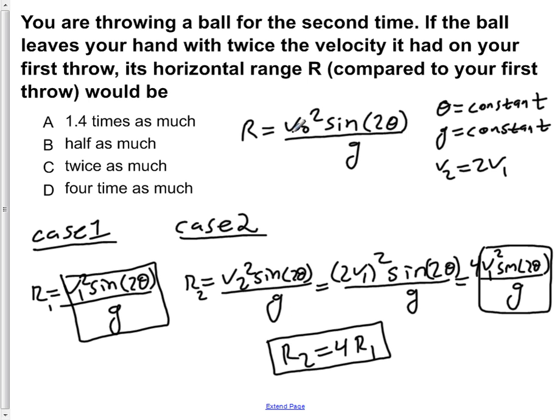This here answers our question. The total horizontal range compared to our first throw would be 4 times as much. So our answer is D, 4 times as much.